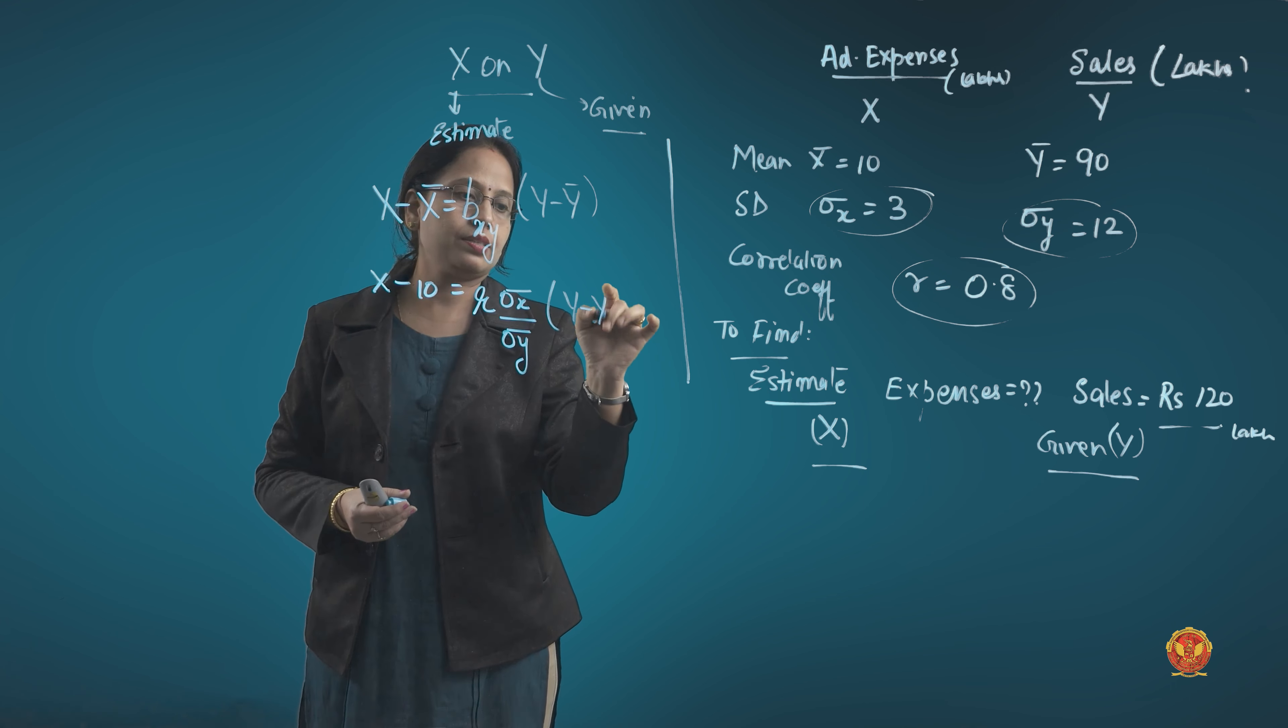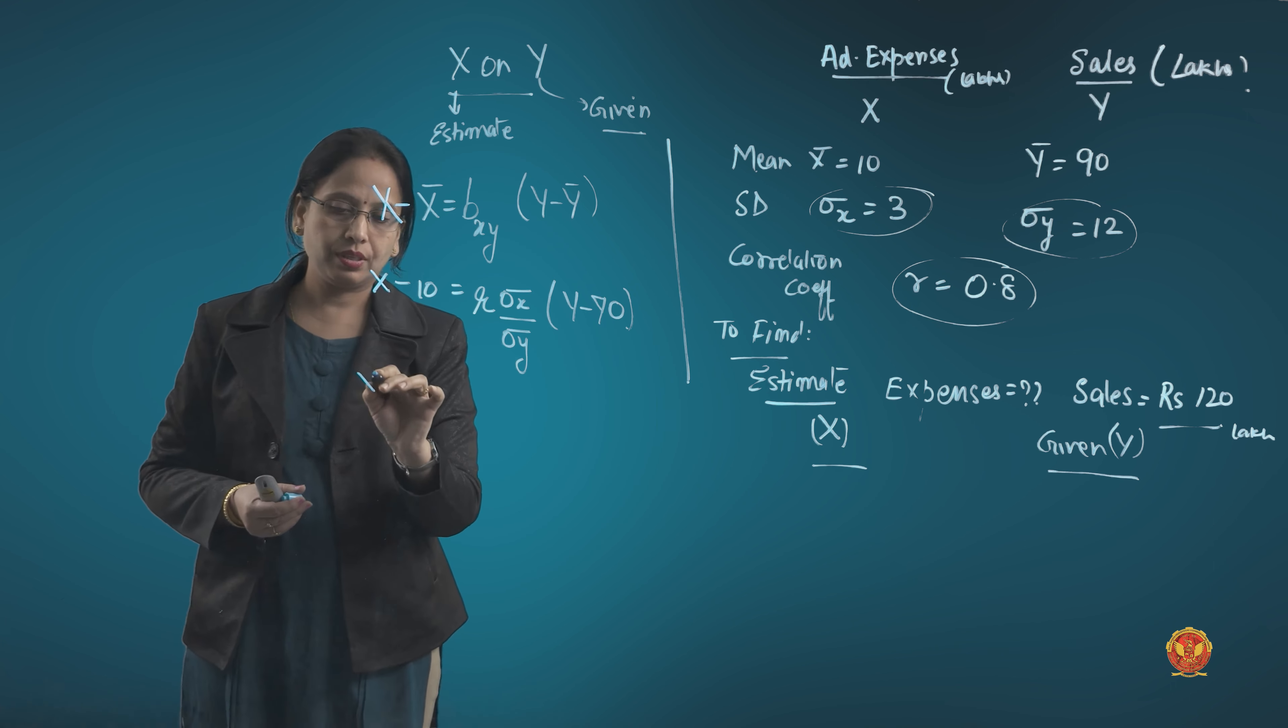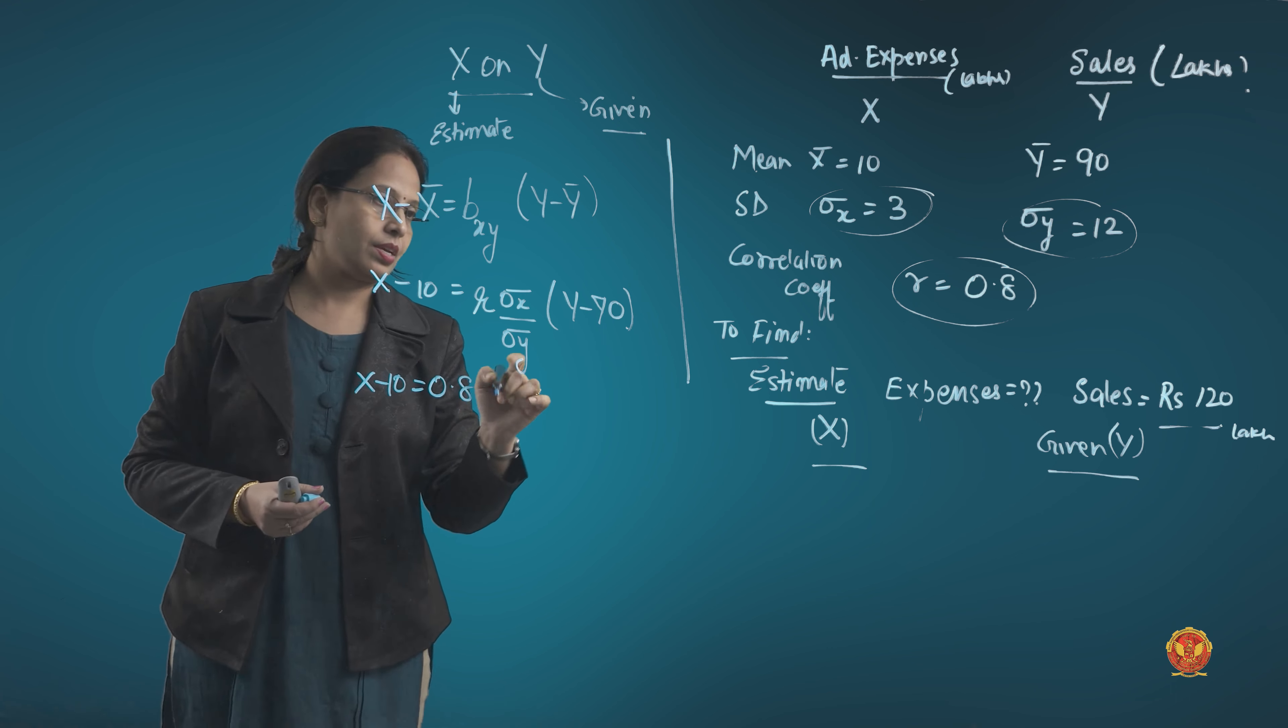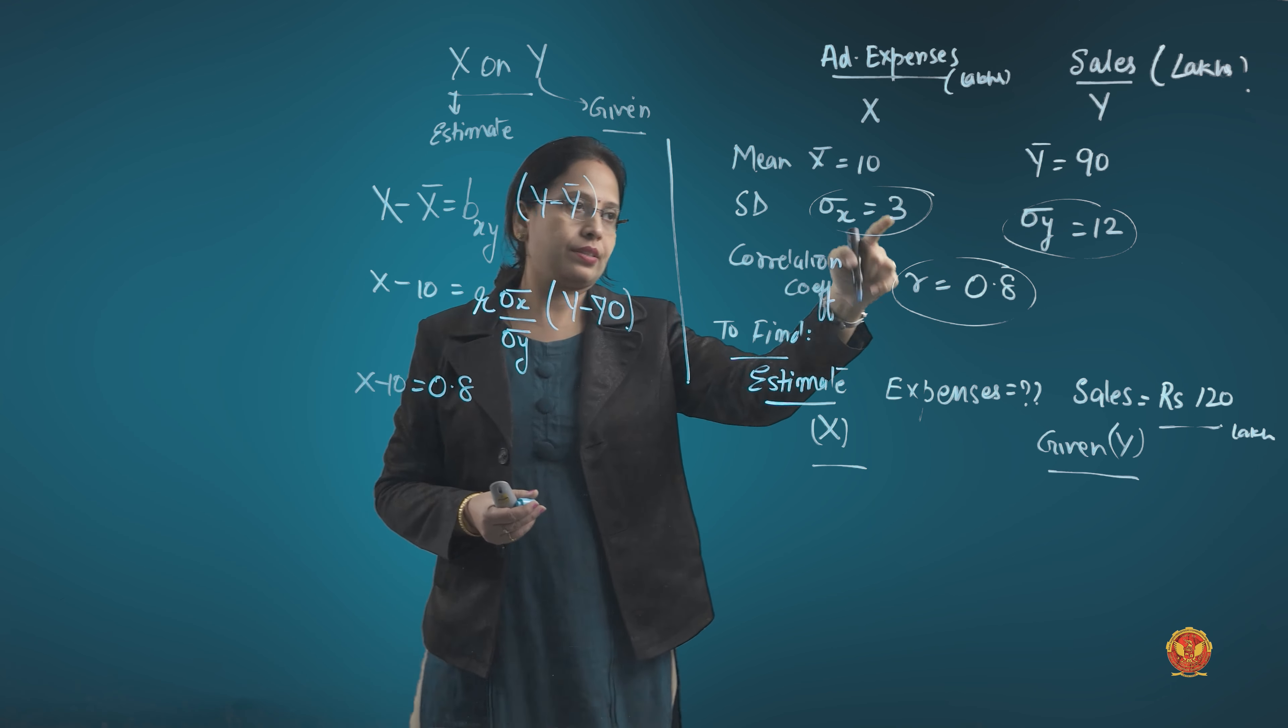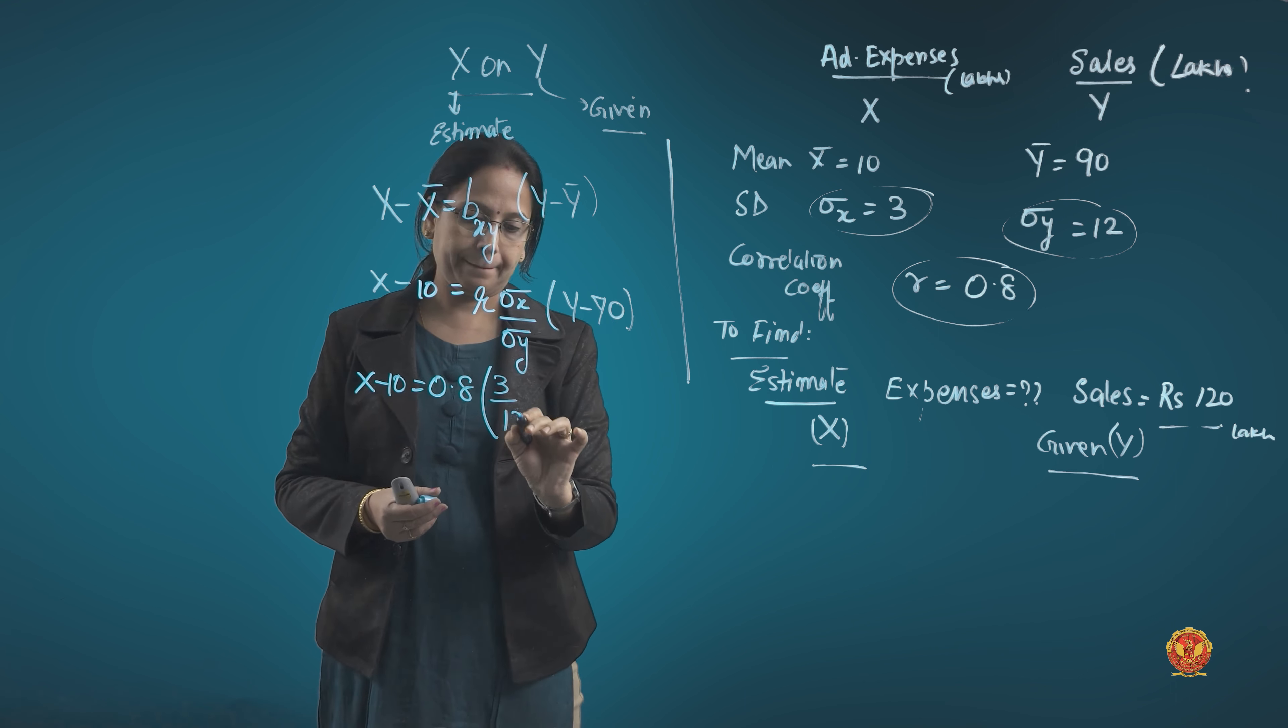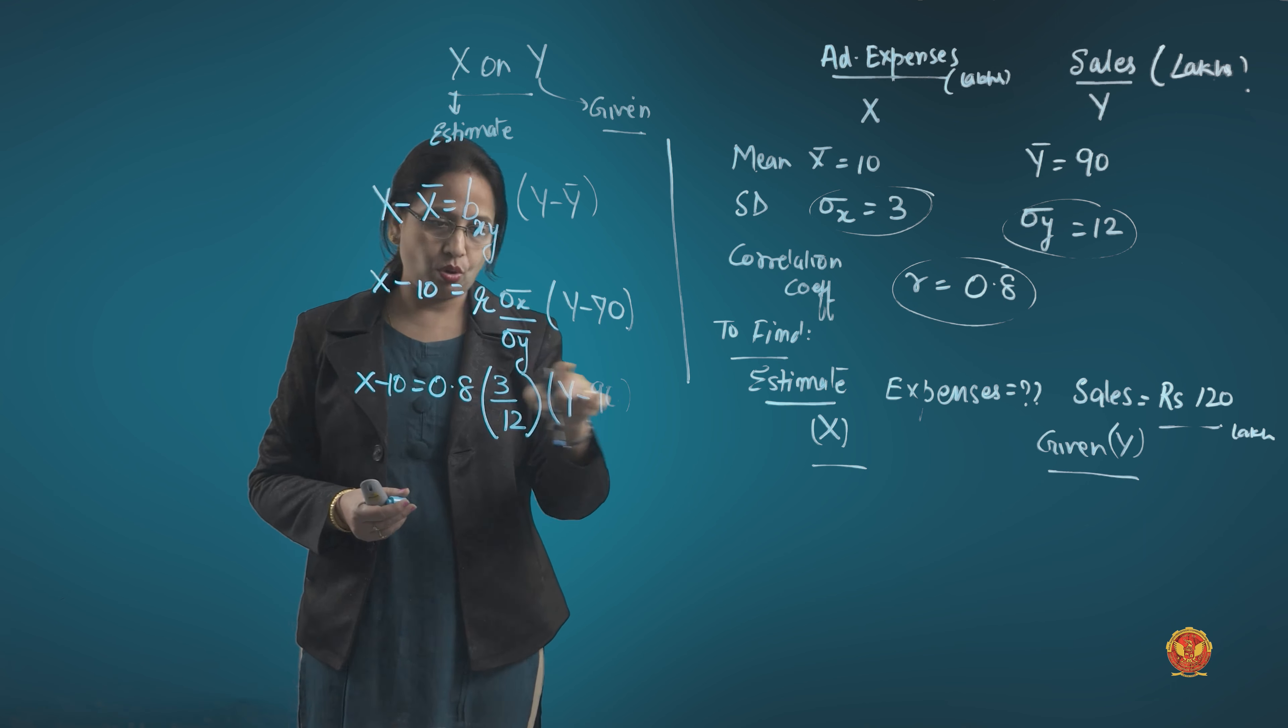Y mean they have already given you as 90. Put the values: x minus 10 equals r, which is 0.8, times standard deviation of x, which is 3, divided by standard deviation of y, which is 12, times y minus 90. Resolve and solve this.